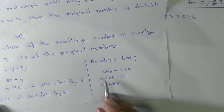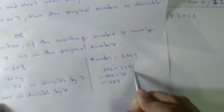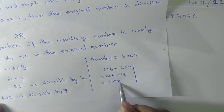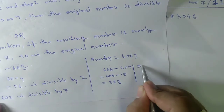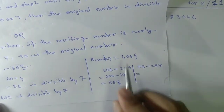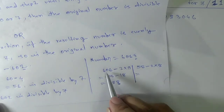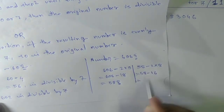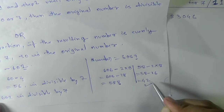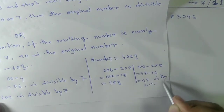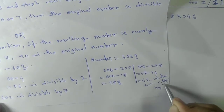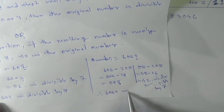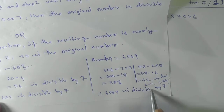We got 588. We don't immediately know if this is divisible by 7, so we apply the same rule again. Take the last digit 8, double it to get 16, and subtract from the remaining part 58: 58 minus 16 equals 42. Now 42 is divisible by 7. Therefore we can say that 6069 is divisible by 7.